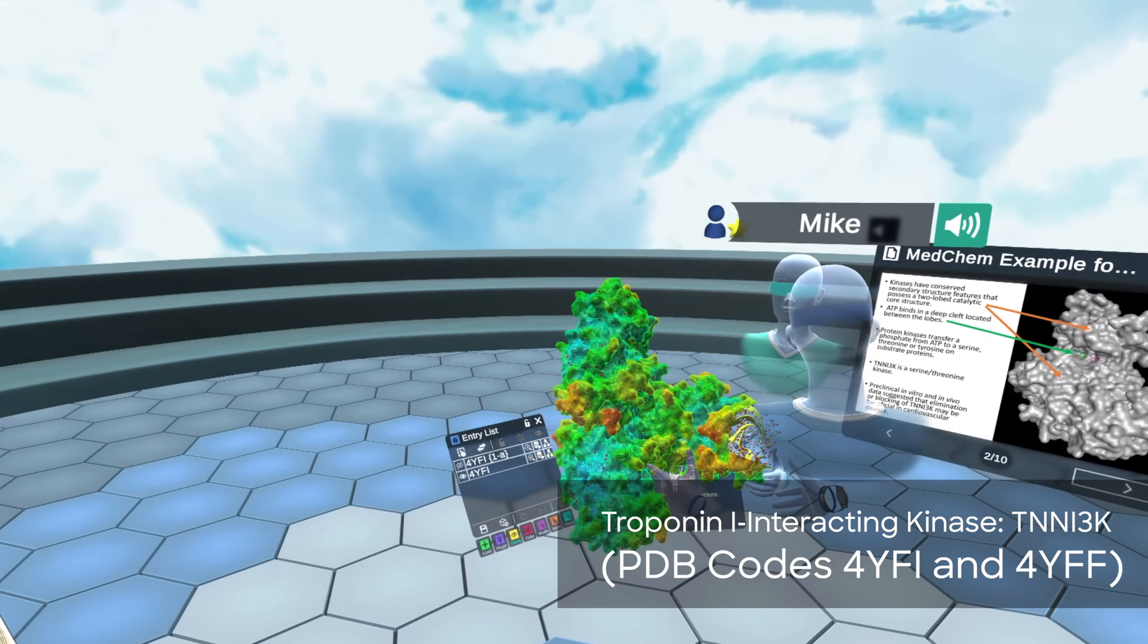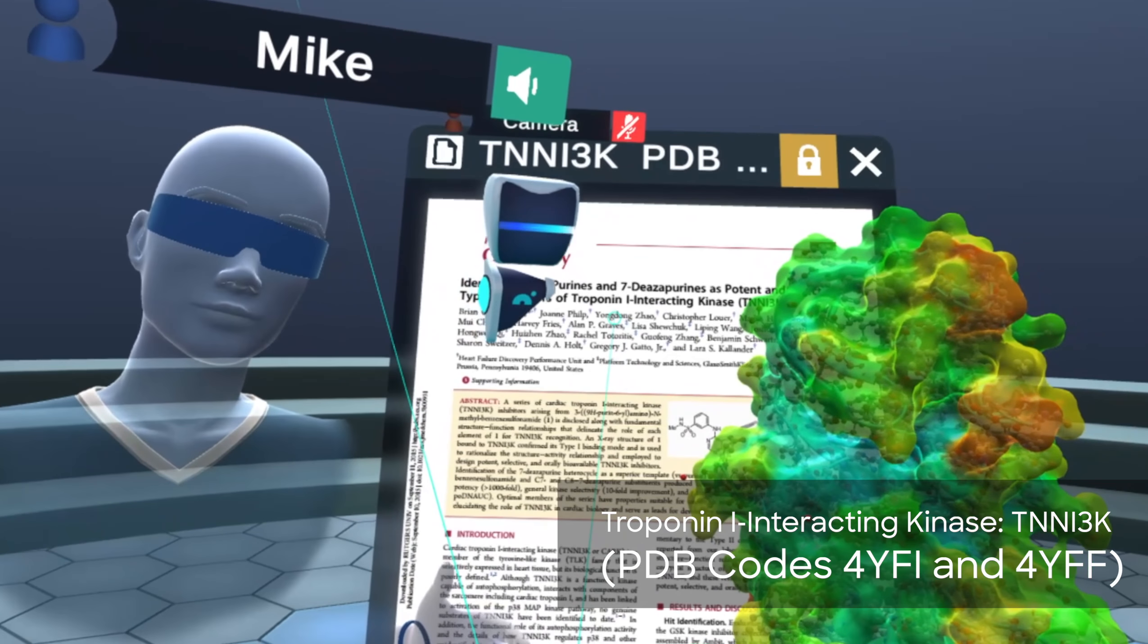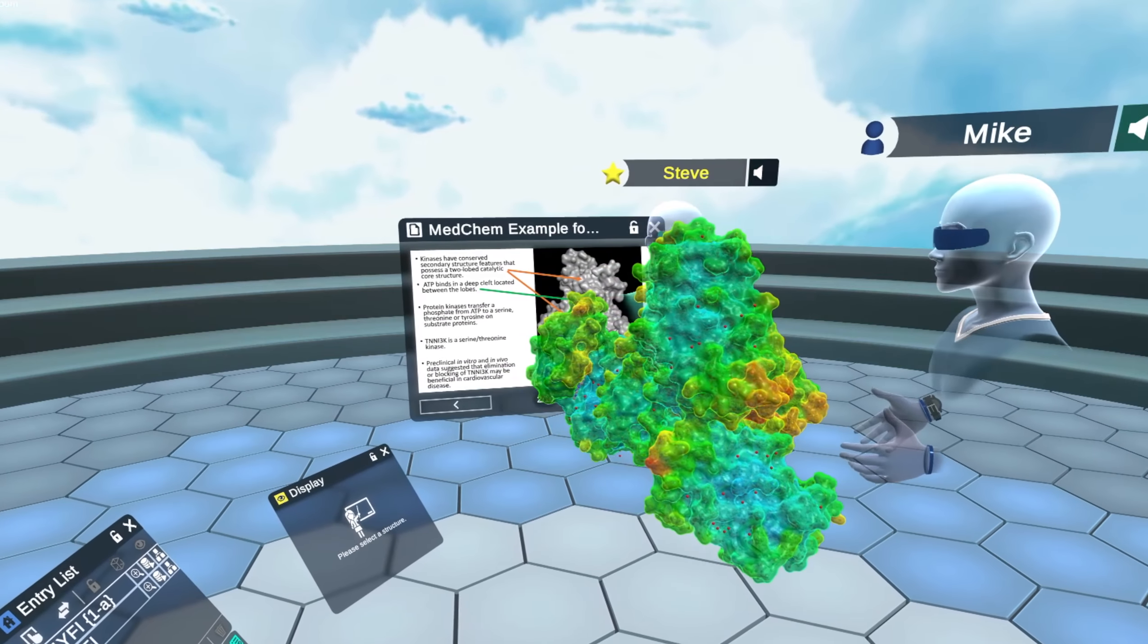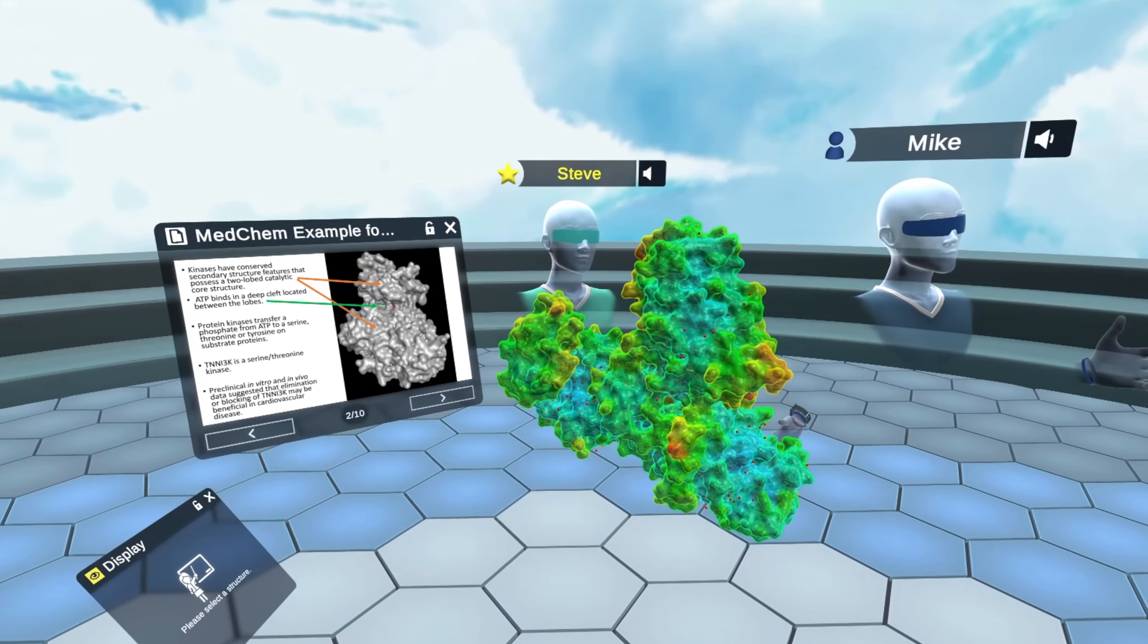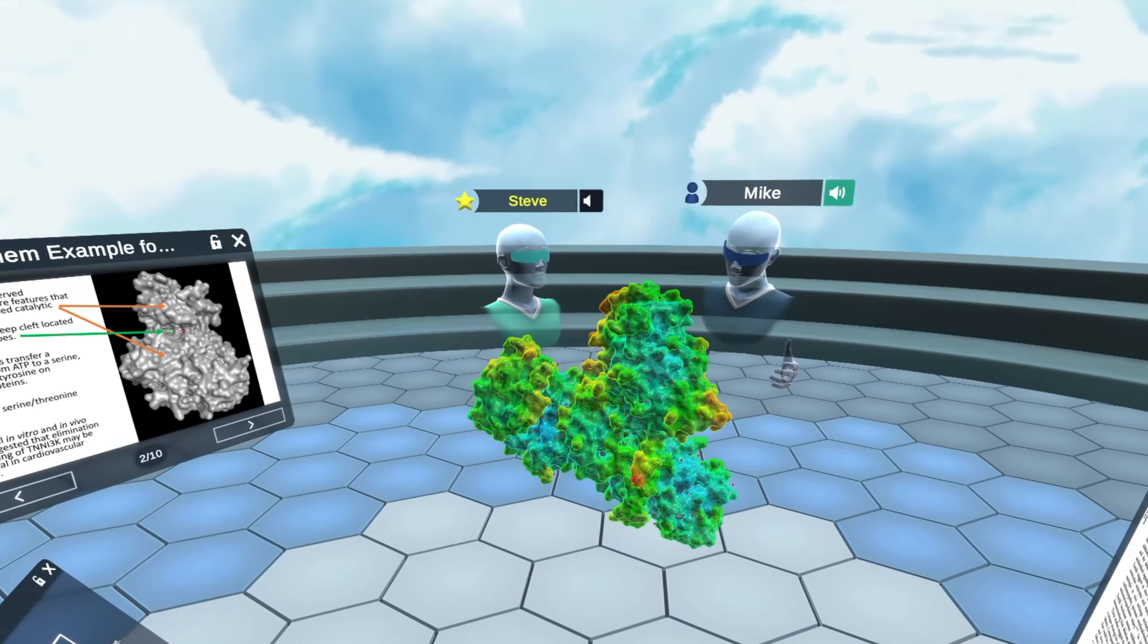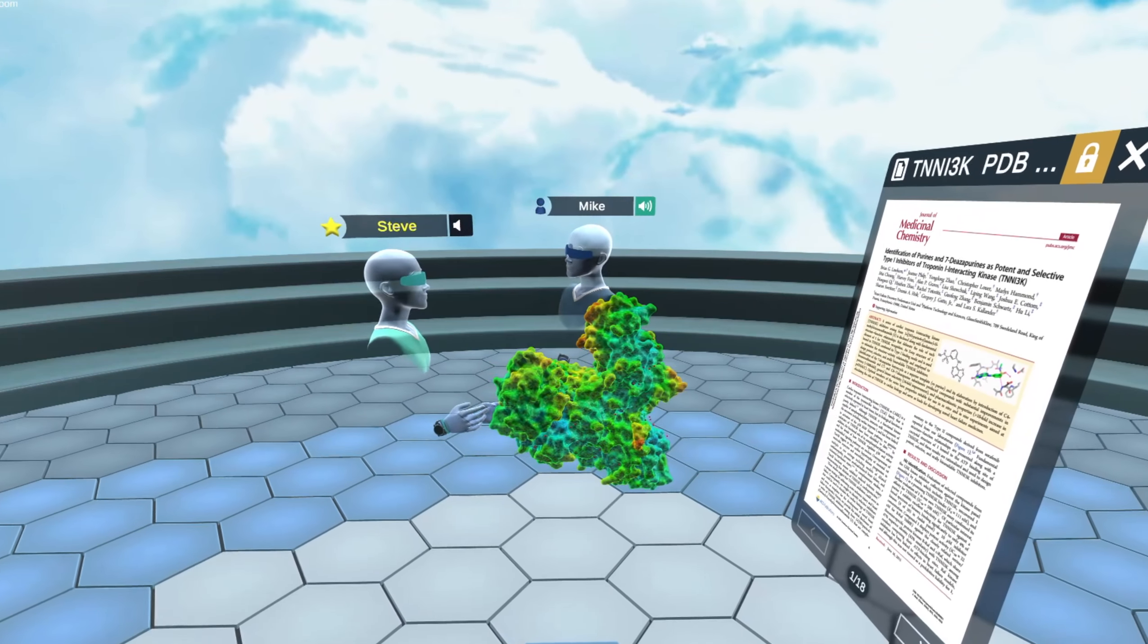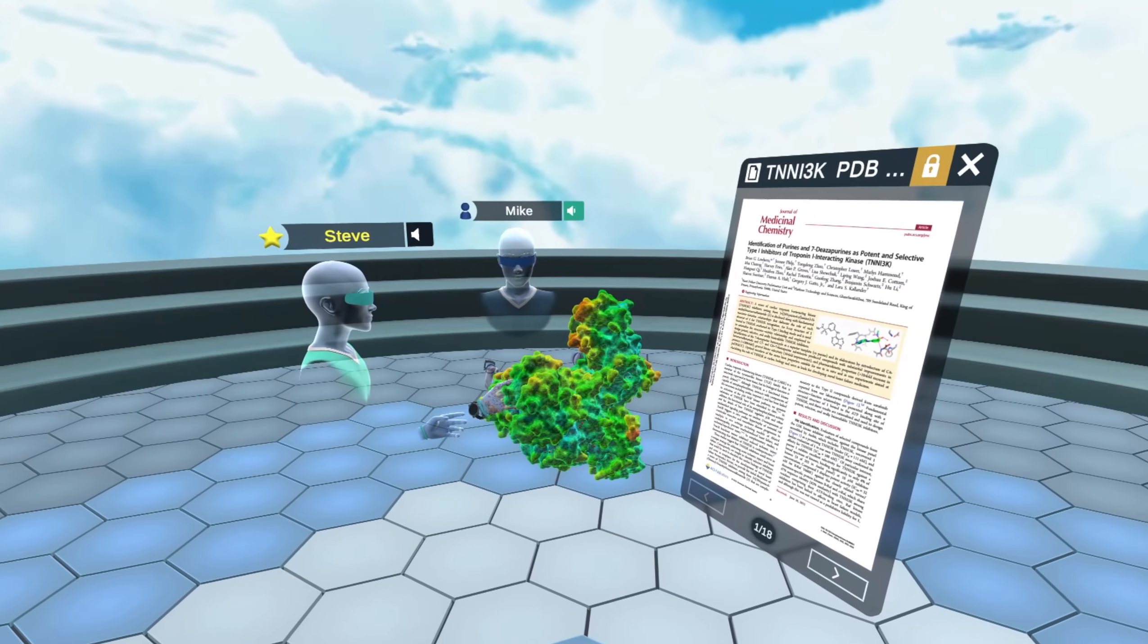And so this TNNI3K is a really interesting one. There's data from rodent studies, both ones where they overexpress the protein and others where they delete the protein, that has led investigators to think this could be a really important target for cardiovascular diseases. So this paper we have here is from some scientists at GSK published a few years ago where they found a new class of ligands that block this kinase. And so we're just going to take a look at the structure and look at the ligands in the active site and see what these scientists were thinking.